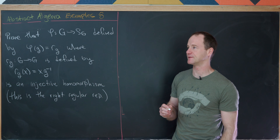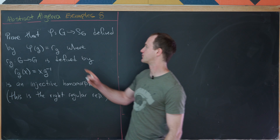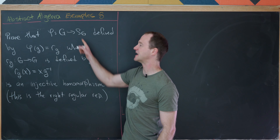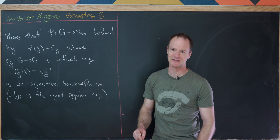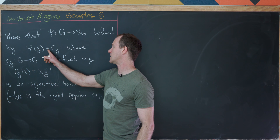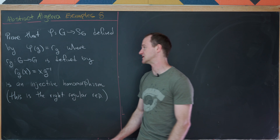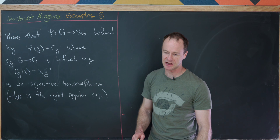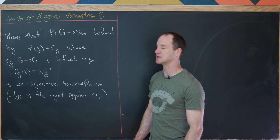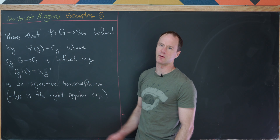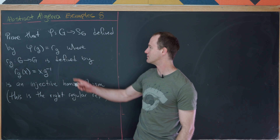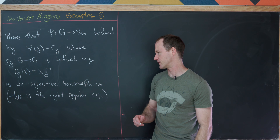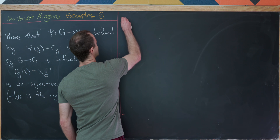Our next example is to prove that φ, a map from G to S(G) — the permutation group on the elements of G thought of as a set — defined by φ(g) = r_g, where r_g is a bijection from G to G defined by r_g(x) = x·g⁻¹, is in fact an injective homomorphism. This is called the right regular representation of G in S(G); we looked at the left regular representation in the main video.